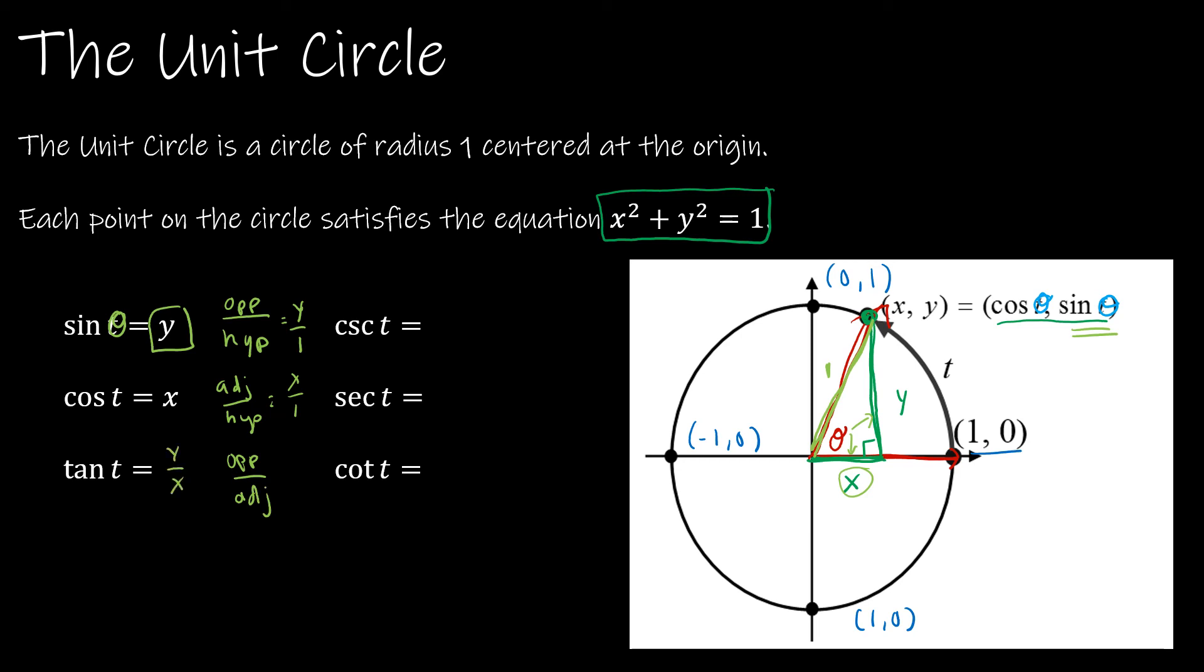The others are simply reciprocals, so the reciprocal of sine is cosecant, which means instead of y over 1, I get 1 over y. The reciprocal of cosine is secant, so I just remember that the cos don't go together. Cosine and secant, so that's the reciprocal, 1 over x.